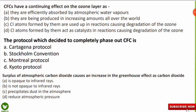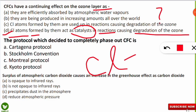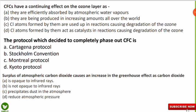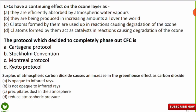CFCs have a continuing effect on the ozone layer because they do what? The correct option is D — the chlorine atoms present in CFCs act as a catalyst in reactions in the ozone layer, causing continuous degradation of ozone. A single chlorine atom can degrade thousands of ozone molecules throughout its lifetime, continuously going from one ozone molecule to another and detaching singlet oxygen. This is why CFCs have a continuing, not a one-time, effect.